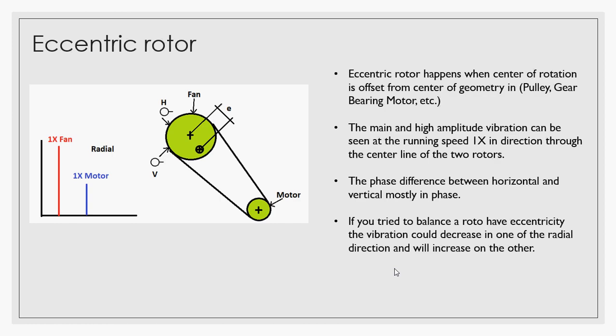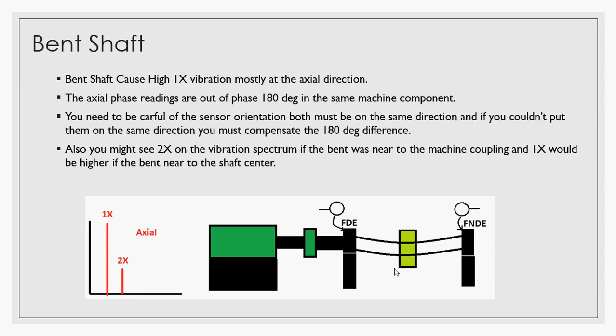The second condition which you can have high 1X will be in the bent shaft. The bent shaft can cause high 1X mostly in the axial direction. The axial phase readings are out of phase about 180 degrees in the same machine component.